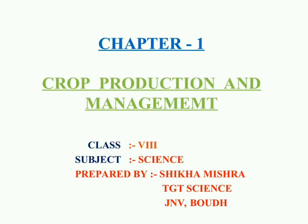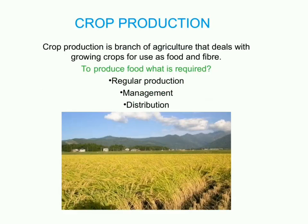We have already talked about in class 7th the nutrition in plants and animals, and this nutrition is derived from food. When we talk about the consumption of food, where does this food come from? There is a sequence: first, regular production of food; second, management; third, distribution of food. These three steps are necessary to provide food for a large-scale population.